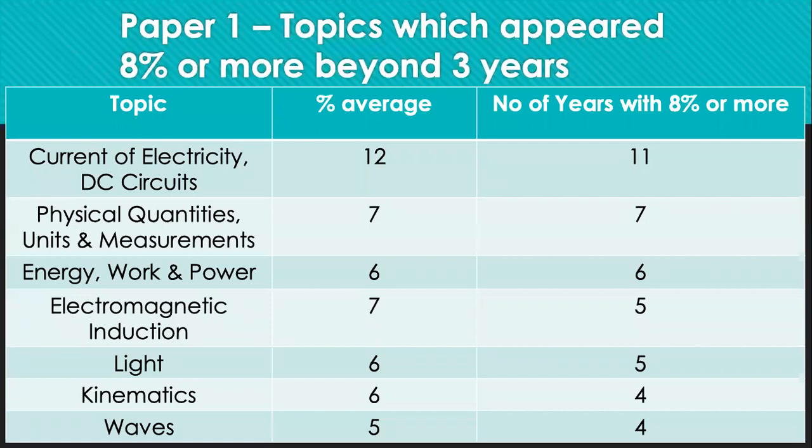Now, for paper 1, which is the MCQ, the topics which appear 8% or more beyond 3 years are as follow. The most popular topic is current of electricity and DC circuit. I classify these two topics together because the questions are often interlinked or integrated.